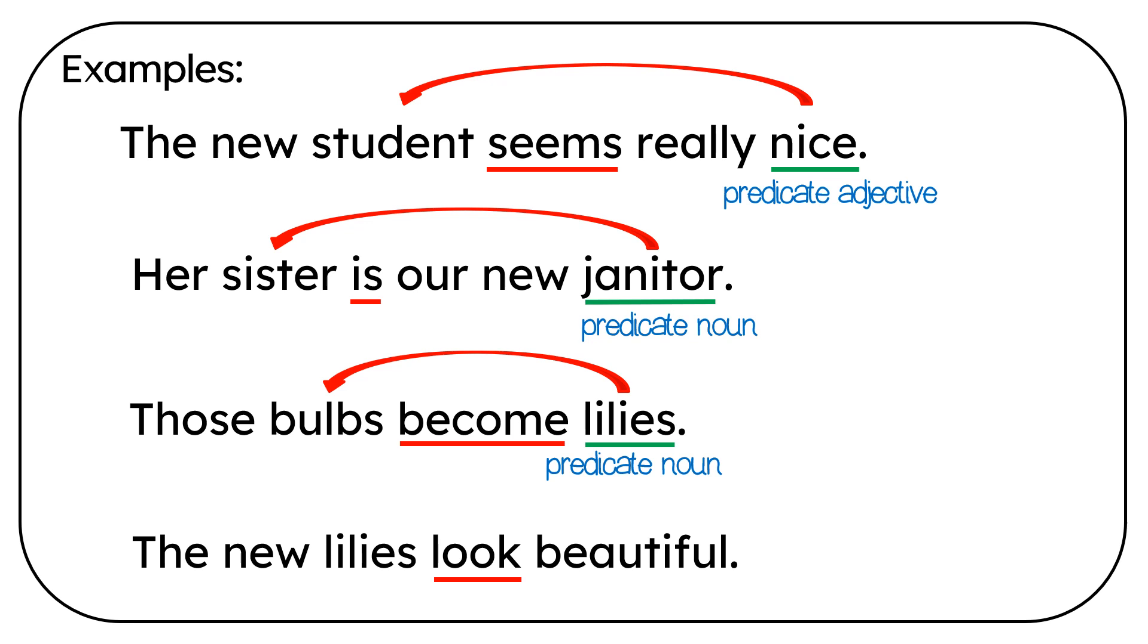The new lilies look beautiful. Look is the linking verb. Beautiful is the predicate adjective. It's describing lilies.